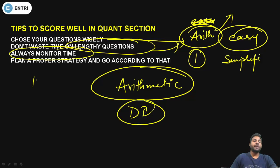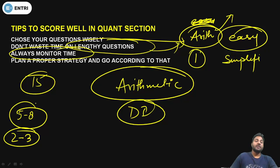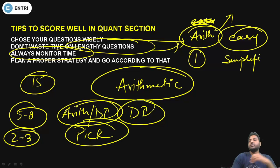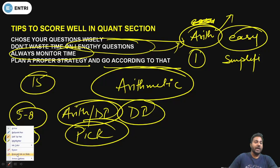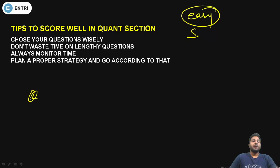Always monitor time — you will have only 15 minutes. If you get 5–8 questions from Simplification, you should take only 2–3 minutes for those. For the Arithmetic and DI segments, you need to pick questions carefully; if you cannot solve them in the given time, move on. If I were in your place, I would start with the easy segment — Simplification, Quadratic Equations, and Number Series — because they take less time and you won't get stuck.